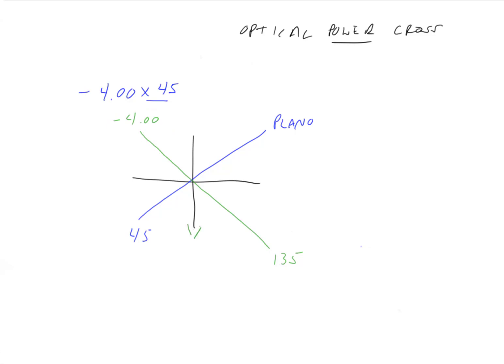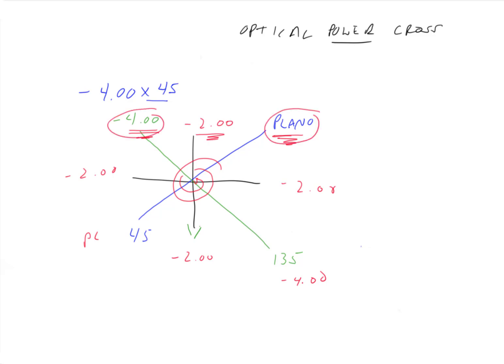What do you think the power would be halfway between them? Halfway between plano and minus 4 would be minus 2. So we go from plano to minus 2 to minus 4, back to minus 2, back to plano, to minus 2, to minus 4, back to minus 2 to plano. As we go around the cross, the highest number would be plano and the lowest number would be minus 4, with everything in between being something between plano and minus 4. One third of the way from plano to minus 4 would be minus 1, halfway minus 2, three quarters of the way minus 3, and at four fourths of the way minus 4.